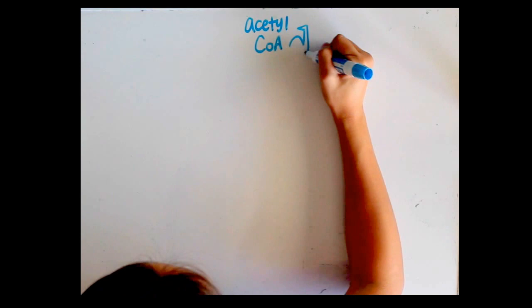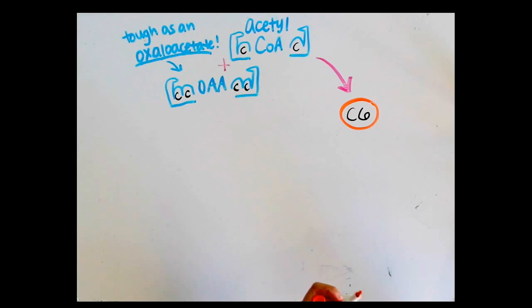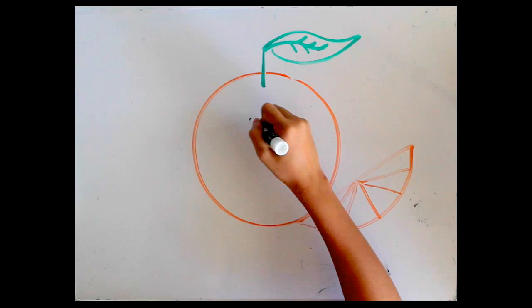We're starting now at acetyl-CoA with 2 carbons. Enzymes work with oxaloacetate with 4 carbons, becoming a 6-carbon compound called citric acid.